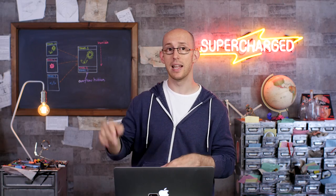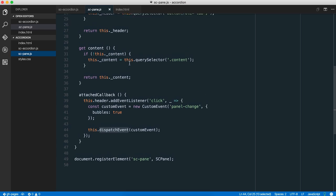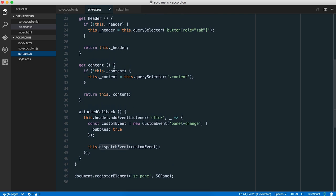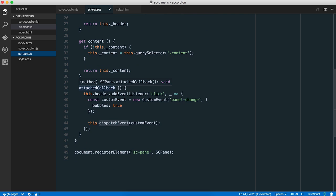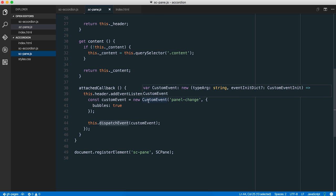But maybe you're wondering, how, in fact, do you do the bit where you click on a header, or you select it with a keyboard and you hit Enter? What happens then? Glad you asked. Here to answer your questions. So we have to jump over to the SC pane JavaScript for that. And all we have in here, really, apart from a couple of getters, is this attached callback. And when you click on the header inside one of the panes, we dispatch a custom event.